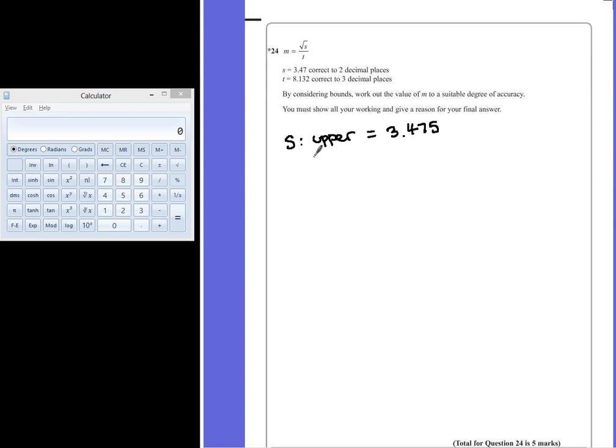In similar fashion, the lower bound would be halfway towards the number below it, which is 3.465, because this number or anything above it could have been rounded up to 3.47.